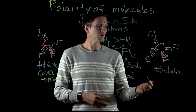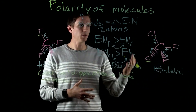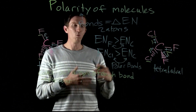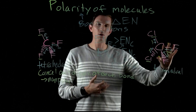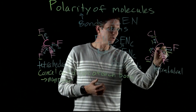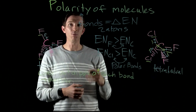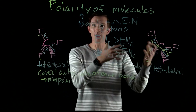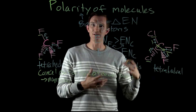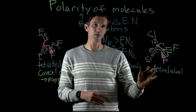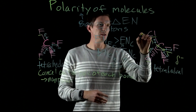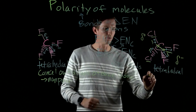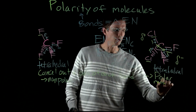For CCl2F2, even though it's also tetrahedral, fluorine is more electronegative than chlorine, meaning the C–F bond dipoles are stronger than the C–Cl bond dipoles. As a result, there is a net pull of electrons toward the two fluorine atoms. The chlorines are pulling electrons away from carbon, but not as strongly as the fluorines. This gives the molecule an overall dipole moment pointing toward the fluorine side, leaving a positive side on the chlorine side — making it a polar molecule.